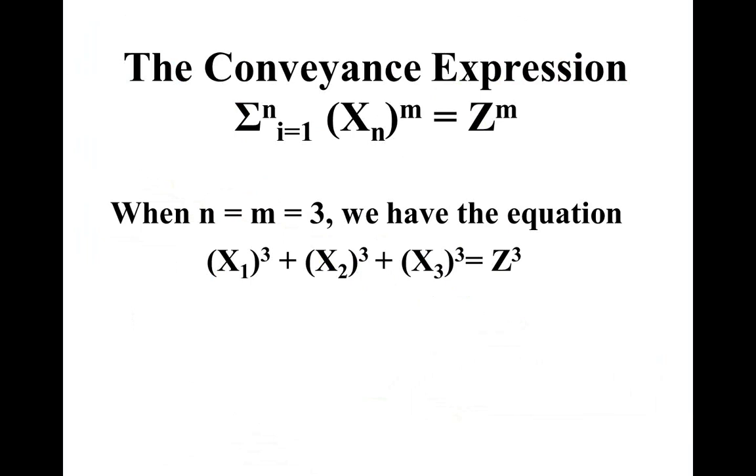For example, when n and m are both equal to 3, this conveyance expression yields x₁³ + x₂³ + x₃³ = z³. The x₁, x₂ and x₃ and z all have to be integers if this is going to be the combination of three elementary particles. So we have to have integer solutions. But it turns out, Fermat's theorem tells us that we can't combine two because if you have x₁³ + x₂³, it can never equal z³. So that means two symmetric particles cannot combine to form a third one, but three can.